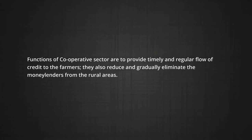Functions of the cooperative sector include providing timely and regular flow of credit to farmers, reducing and gradually eliminating money lenders from rural areas, providing credit facilities to all regions of the country to help reduce regional disparities, and funding special programs meant for the upliftment of rural areas.